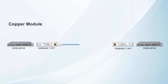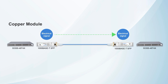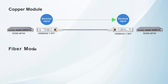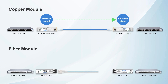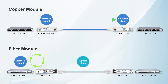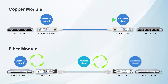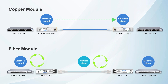Copper modules use standard Ethernet cables to transmit electrical signals without requiring optical-electrical conversion, as data is directly transmitted through copper cables. On the other hand, fiber modules consist of functional circuits and optical interfaces integrating both transmission and reception. The transmitting end converts electrical signals from the device into optical signals, while the receiving end converts the optical signals back into electrical signals for the device.